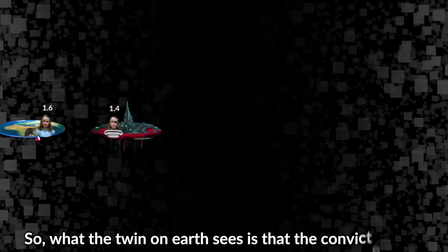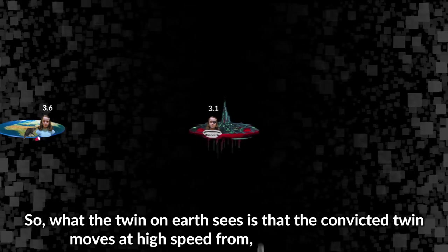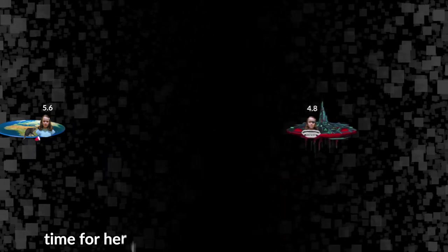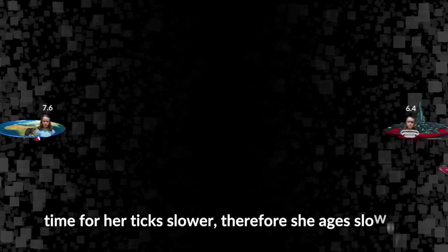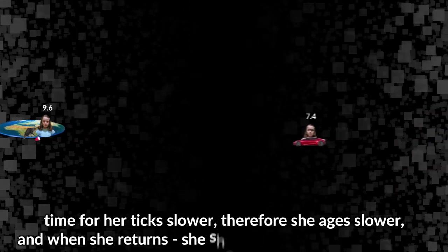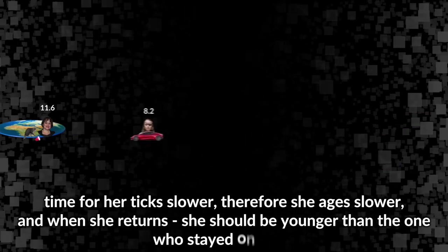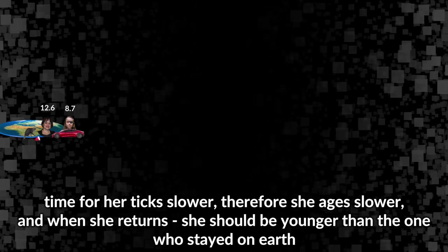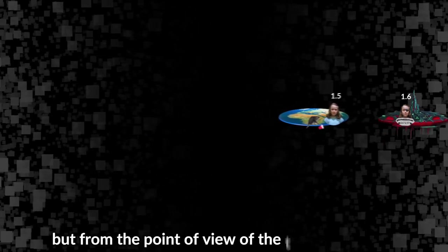But then at some point the jailed twin escapes, takes a speedpod, and flies back to earth at the same high speed to have her revenge. So what the twin on earth sees is that the convicted twin moves at high speed from and back to earth. Time for her ticks slower, therefore she ages slower, and when she returns she should be younger than the one who stayed on earth.